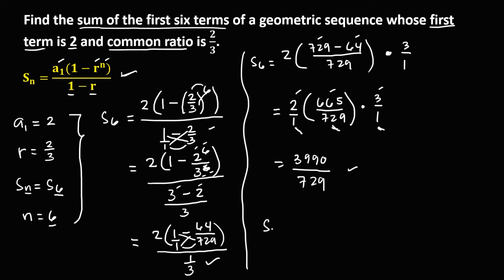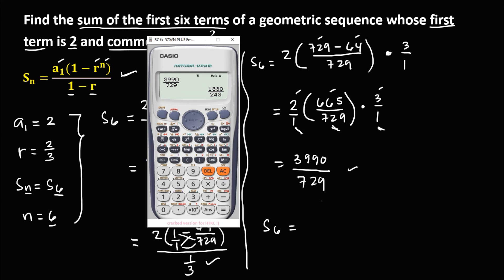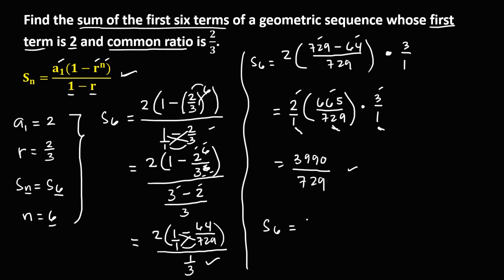So the sum of the first 6 terms is equal to 1,330 over 243.